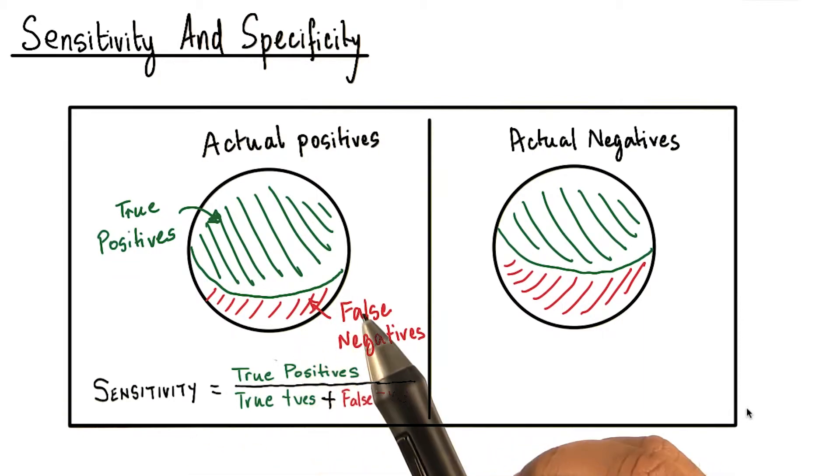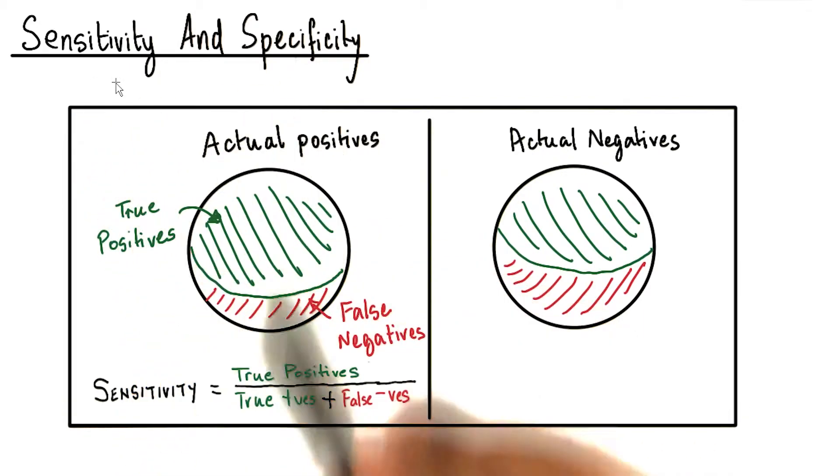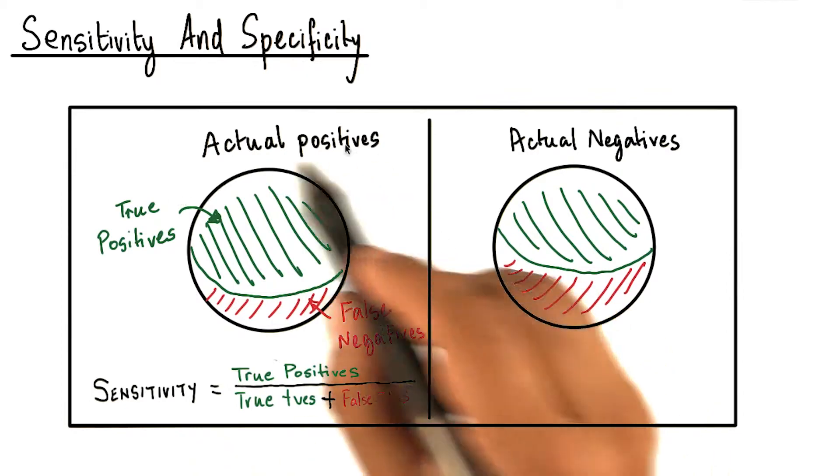We will now look at two other metrics known as sensitivity and specificity. Let's consider this diagram.